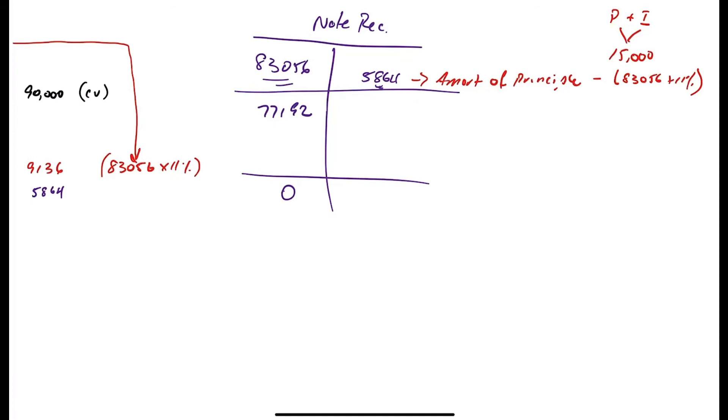So what would happen is this amount, and I'll just do it quick for the second year. So $77,192 times 11% is $8,491 minus the $15,000 payment. Next year's amortization is $6,509. And then the year after that, it would be bigger and bigger to help this number get down to zero over nine years.